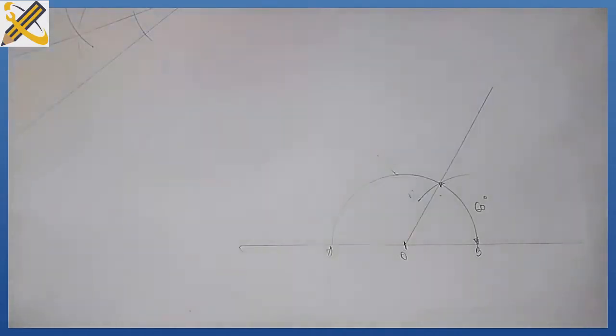The first thing you need to do is construct a 60-degree angle first. Then after getting your 60-degree angle, you bisect the angle to get your 30-degree angle. So how do I bisect this angle?